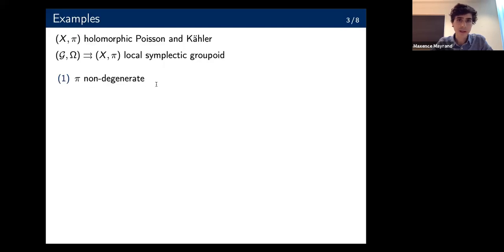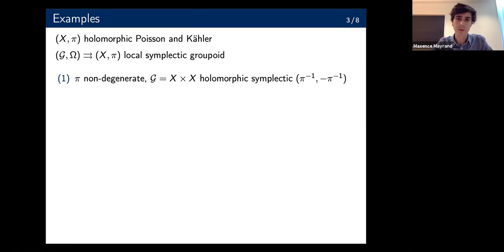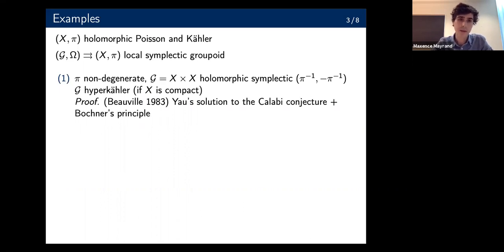First, if pi is non-degenerate, we can take the pair groupoid. This has a canonical holomorphic symplectic structure — just the inverse of pi on the left factor and its opposite on the right factor. That's a groupoid integrating the Poisson manifold, and it's hyperkähler, at least if X is compact, because any compact holomorphic symplectic manifold is hyperkähler. The first to observe this was Beauville in 1993, by combining Yau's solution to the Calabi conjecture — which gives a Ricci-flat Kähler metric — and using the Bochner principle, it has the correct holonomy to be hyperkähler.